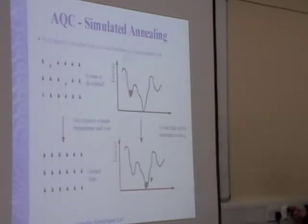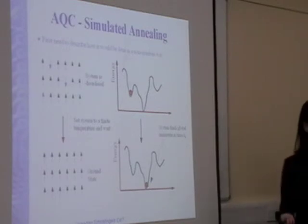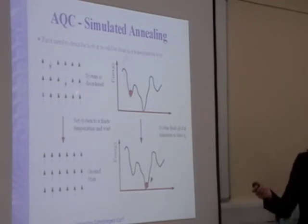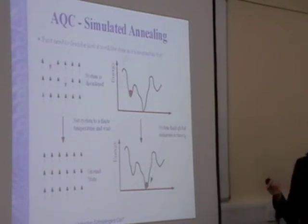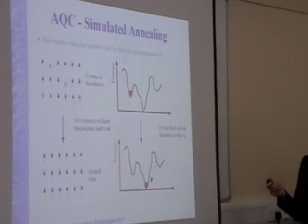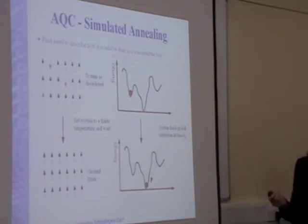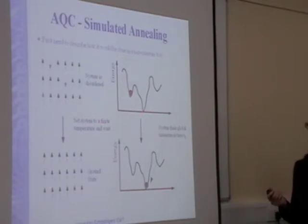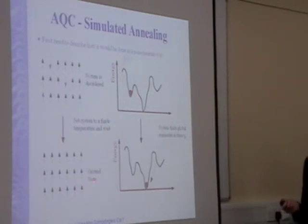Simulated annealing works as follows: you start with a disordered system and you're trying to find the lowest energy state, which might be a collection of spins or qubits. You set the system to a high temperature, which means you get lots of transitions between different energy states — things flip up and down quite often. Then you slowly lower the temperature, and the idea is that the system should find the global minimum of the possible configurations, corresponding to the ground state of the system. You have to lower the temperature very slowly in order to achieve this.